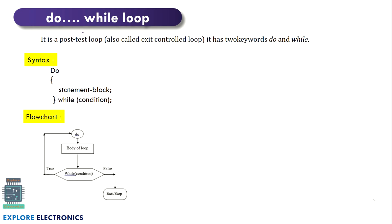Now we have do-while loop. Unlike while loop, this do-while loop is a post-test loop. That means the test condition will be checked at the end of this loop. At least this loop will be executed once before we check for the condition, so we call it an exit control loop. We have two keywords: do and while. First we write the do keyword, then the statement block to be executed, and after the statement block we write the while condition. Once the loop body is executed, it checks the condition. If the condition is satisfied, it will be executed again.